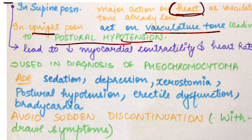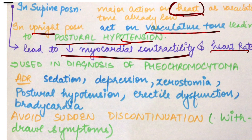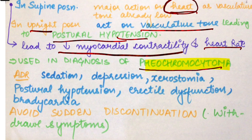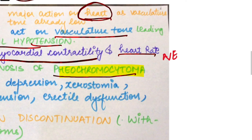In supine position, clonidine acts on the heart — myocardial contractility decreases and heart rate decreases because sympathetic inhibition reduces both. Clonidine is also used in the diagnosis of pheochromocytoma: if we give clonidine but the adrenaline level is not suppressed or decreased, this suggests the source is a tumor secreting catecholamines autonomously.